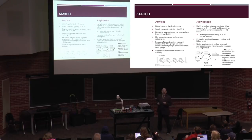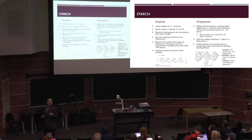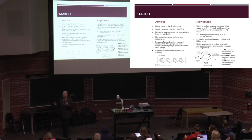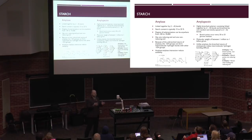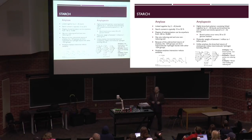Amylopectin has both the alpha 1-4 and alpha 1-6 linkages, whereas amylose just has the linear straight chain. When we talk about physical properties, a highly branched string of sugars behaves very differently than a linear one. Branched polysaccharides are typically shorter in molecular length, but because they're more branched, they enhance viscosity and behave very differently.